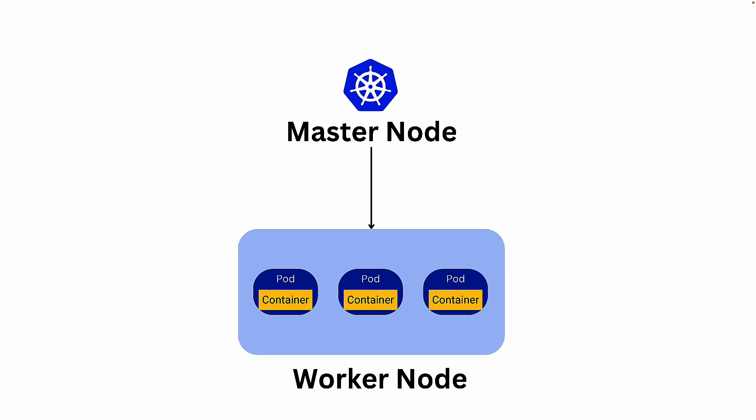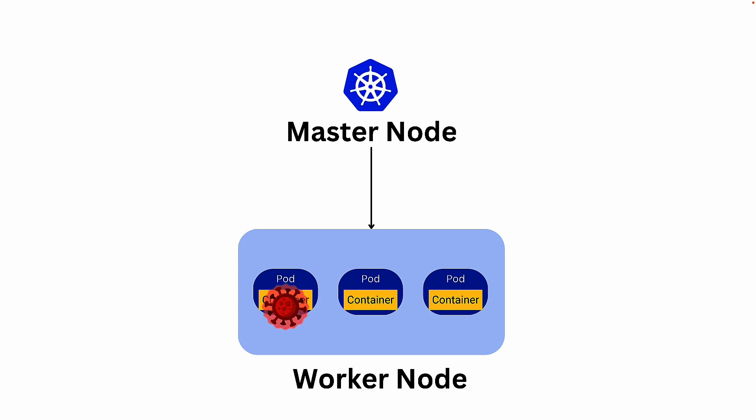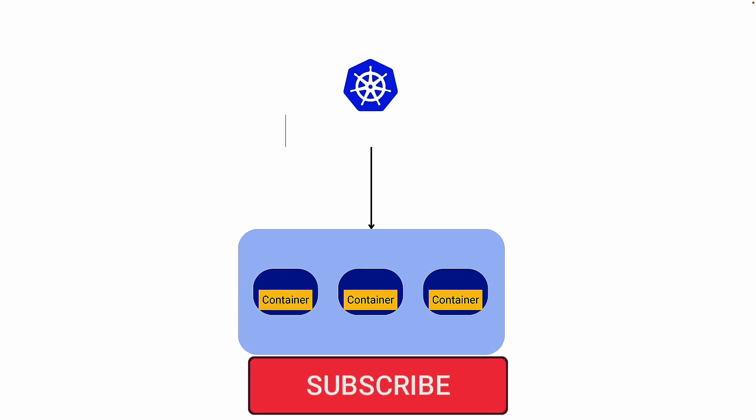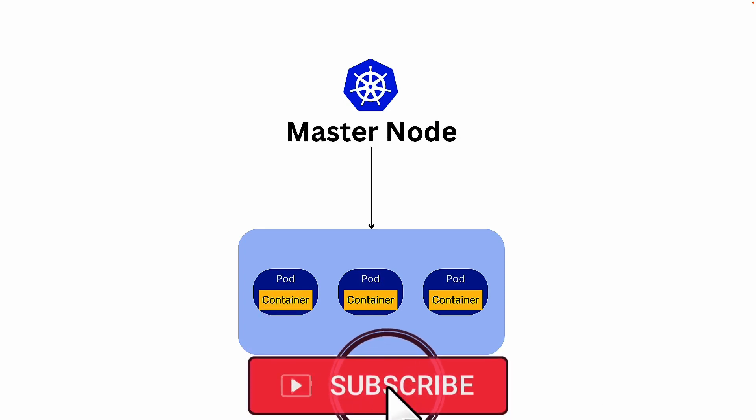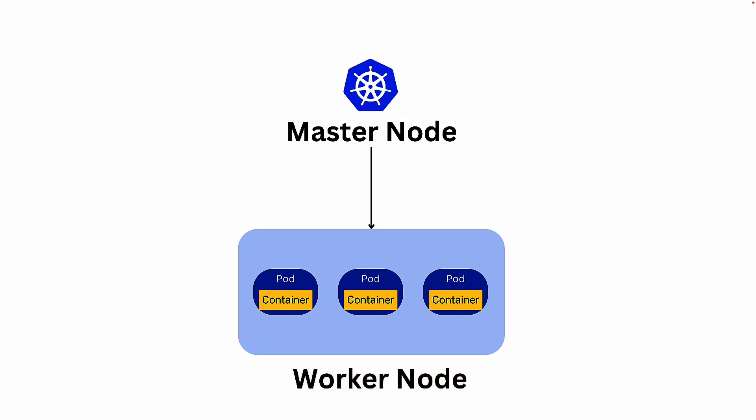It is the master node that tracks all the worker nodes as well as pods inside those worker nodes. If one of the pods under the worker node is having some issues, the master node is responsible for tracking that and replacing the faulty pod with a fresh new pod. So the faulty pod will be removed and replaced by a new healthy pod.